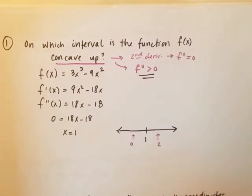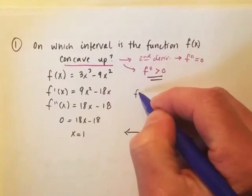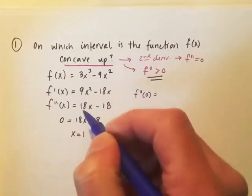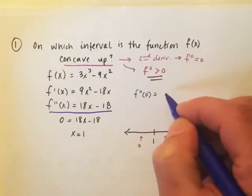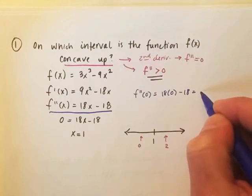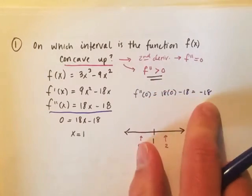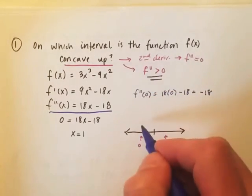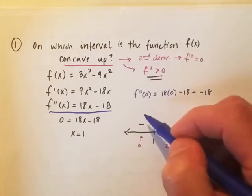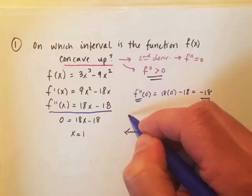We can actually find those f double prime values at each spot. So if I find f double prime of zero, all we have to do is plug in zero to f double prime, which gives me zero minus 18, negative 18. And the big thing is here, the double prime value is negative. And that's what we really need to know, because if the f double prime is negative, we know that that's concave down.